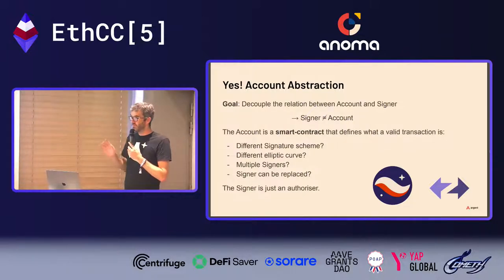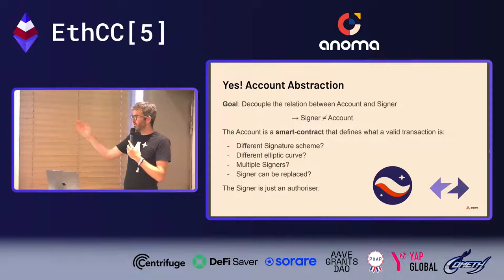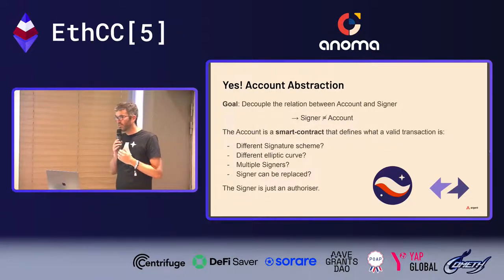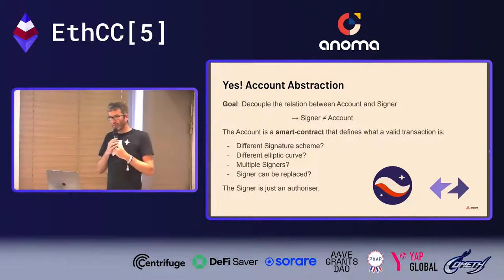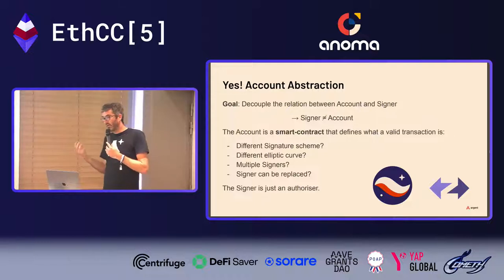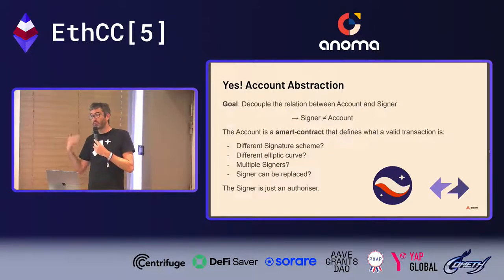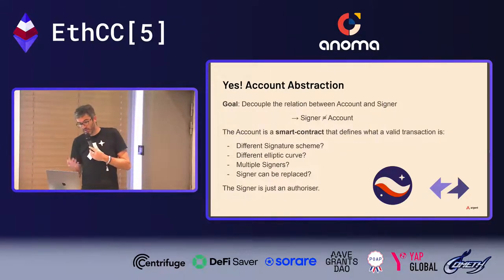With account abstraction you can use a different signature scheme, a different elliptic curve, have multiple signers natively, or have accounts where signers can be rotated. Two leading layer two solutions — Starkware with StarkNet and Matter Labs with ZK-Sync — have decided to launch with native account abstraction. Very soon we'll have two ZK roll-up systems in production that can both scale and enable native account abstraction.